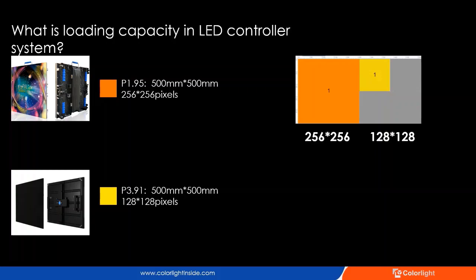So what is the loading capacity in the LED control system? There are two different types of cabinets. The first one is P1.9, with a resolution of 256 by 256. Another is P3.9, with a resolution of 128 by 128. The dimensions of these two cabinets are the same — 500 by 500. When we do the mapping in the software, we follow the resolution of the cabinet, not the physical size. So for the control system, dimension is not a factor and won't affect the loading capacity. We only focus on the pixels.